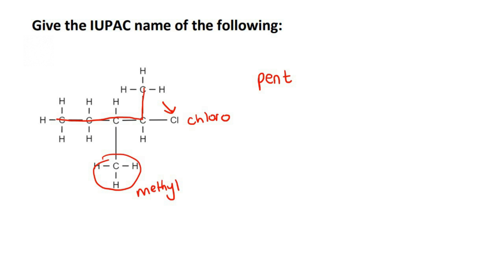Now the idea is that you want the branch numbers to be as low as possible. If we start naming from this side—one, two, three, four, five—then your branches would be on carbon number two and carbon number three.